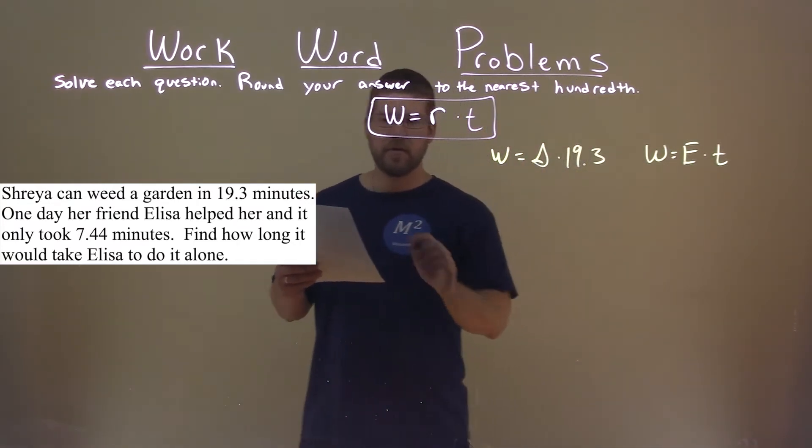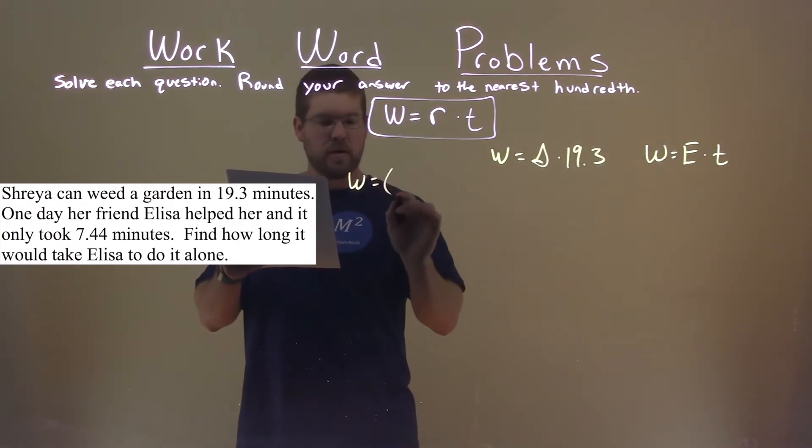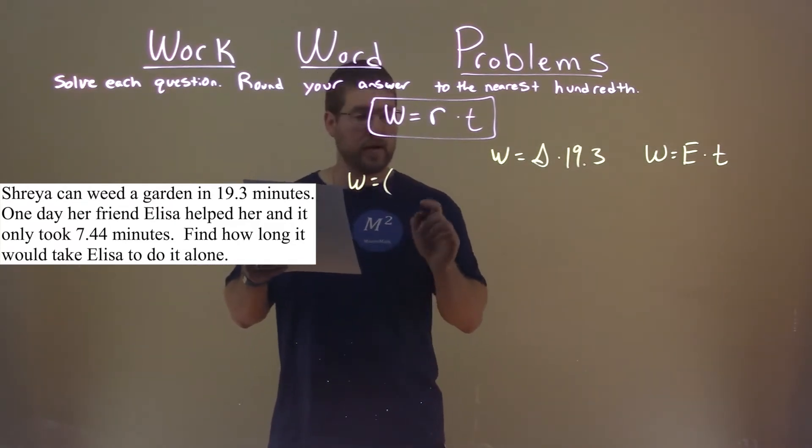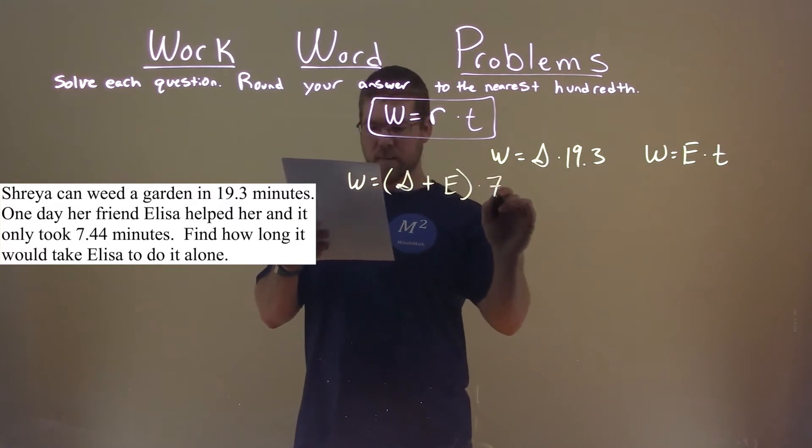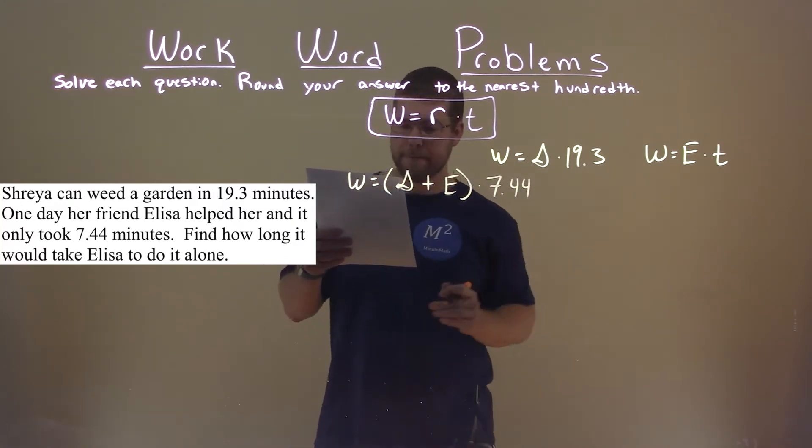Now, they tell us though, if they did the same job of weeding the garden, it takes them 7.44 minutes. So, we add their work rates together, S plus E, times that work time of 7.44 minutes.